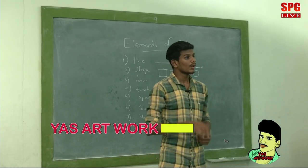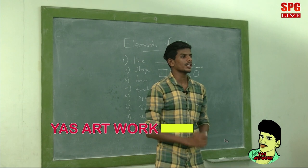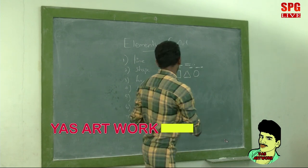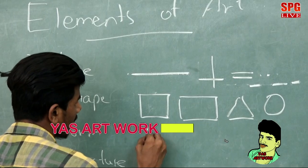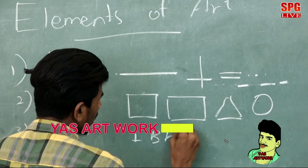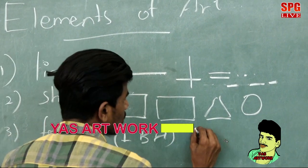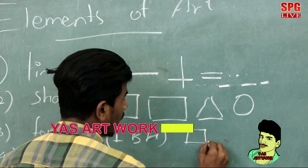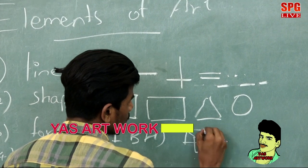The third element is form. Form is arranged in three dimensions: length, breadth, and height. An example of form is a cube.